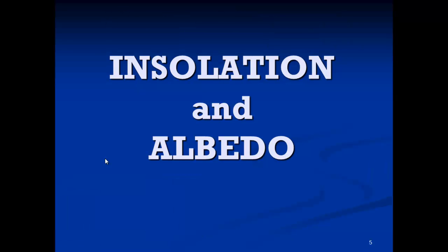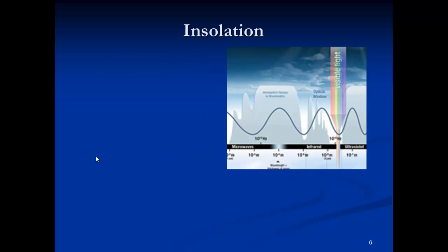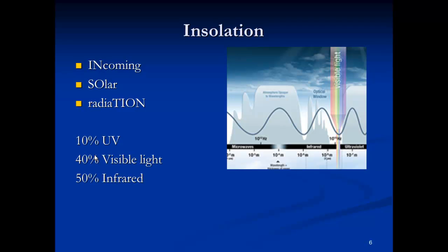A couple of terms that you'll encounter when learning about the Sun's energy on Earth are insolation and albedo. The term for the solar energy that reaches Earth is insolation. You can think of this word as being short for incoming solar radiation. The insolation that affects Earth's surface and atmosphere consists of ultraviolet, visible light, and infrared.